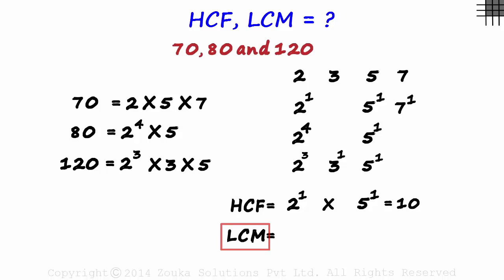For the LCM, we take the highest power of each factor. The factors need not be shared. The highest power in this column is 4. We write 2 raised to 4 here. In this column, we have 3 raised to 1. Why is this the highest? Because others are 3 raised to 0.